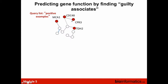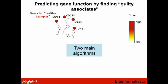Here we have a pretty small network with eleven genes. Four of these genes are in the query list and seven aren't. The question is: what genes are most associated with the query list in this network? There are two main ways of computing this. We use these main algorithms to assign a score to every gene based on how associated they are with the query list. Red means a high score, white means a low score.